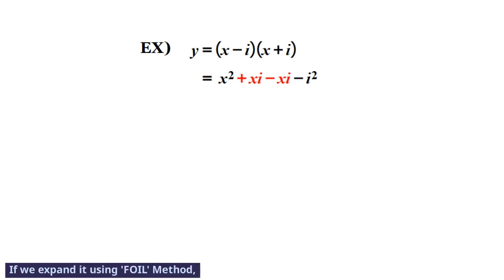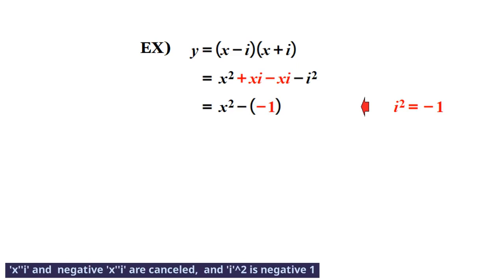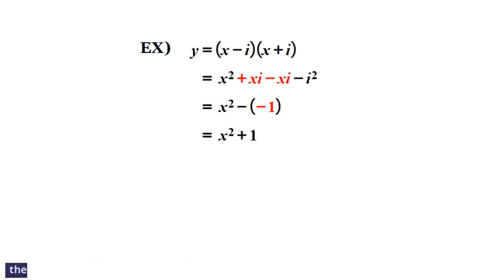If we expand it using FOIL method, x times i and negative x times i are cancelled, and i squared is negative 1. Therefore, it becomes x squared plus 1.